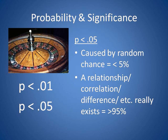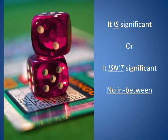If P turns out to be less than .05, and that is the level the researcher chose, the chance that random chance is the cause for the finding is less than 5%. In other words, there is a greater than 95% chance that a correlation, difference, or relationship really exists. Remember, a finding is significant or it is not — it's an either/or thing, no in-betweens. Per Burns and Groves, there are no degrees of significance. Something cannot be strongly or weakly significant. It either is or it isn't.